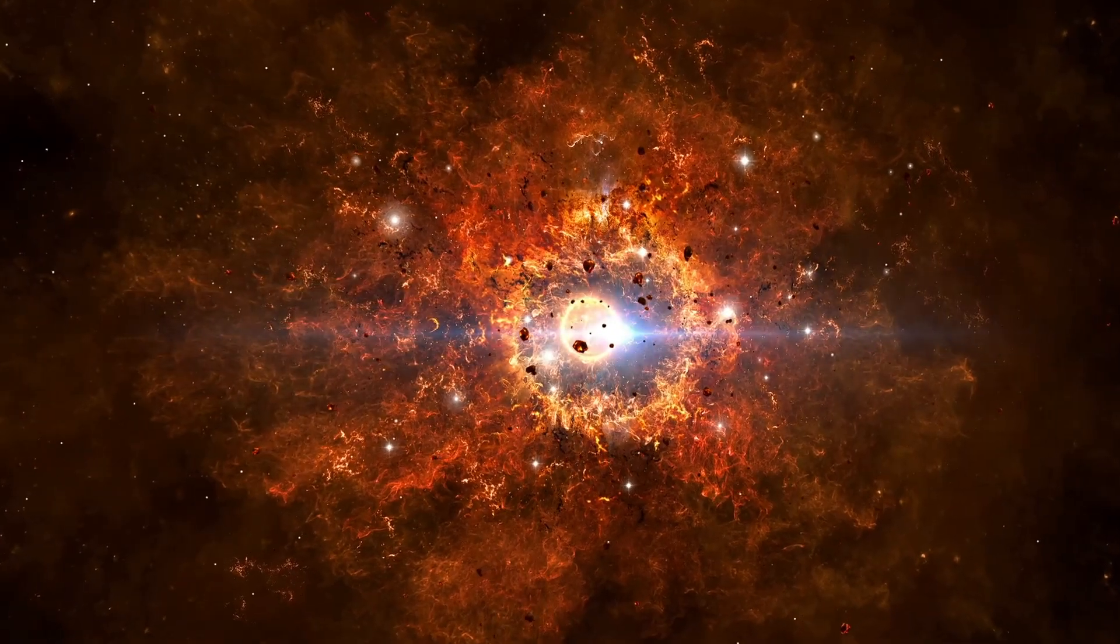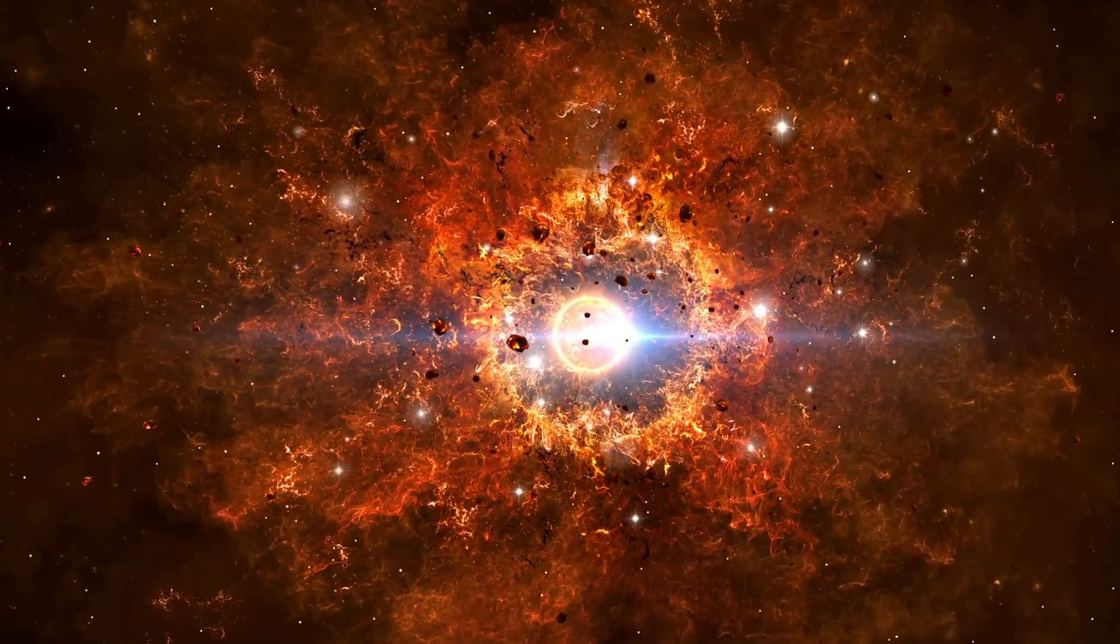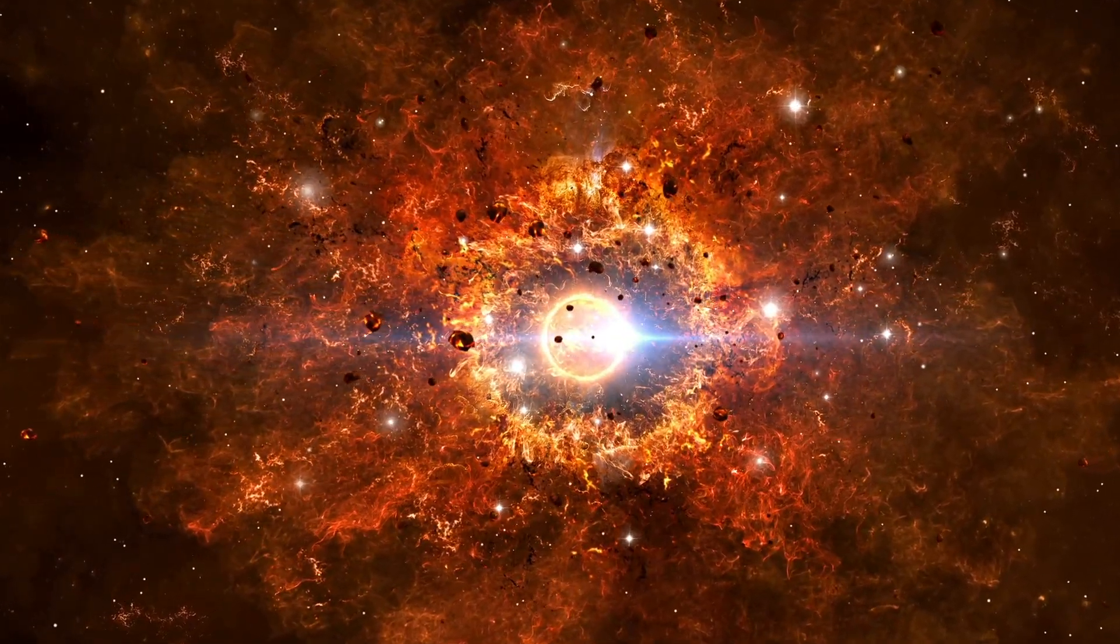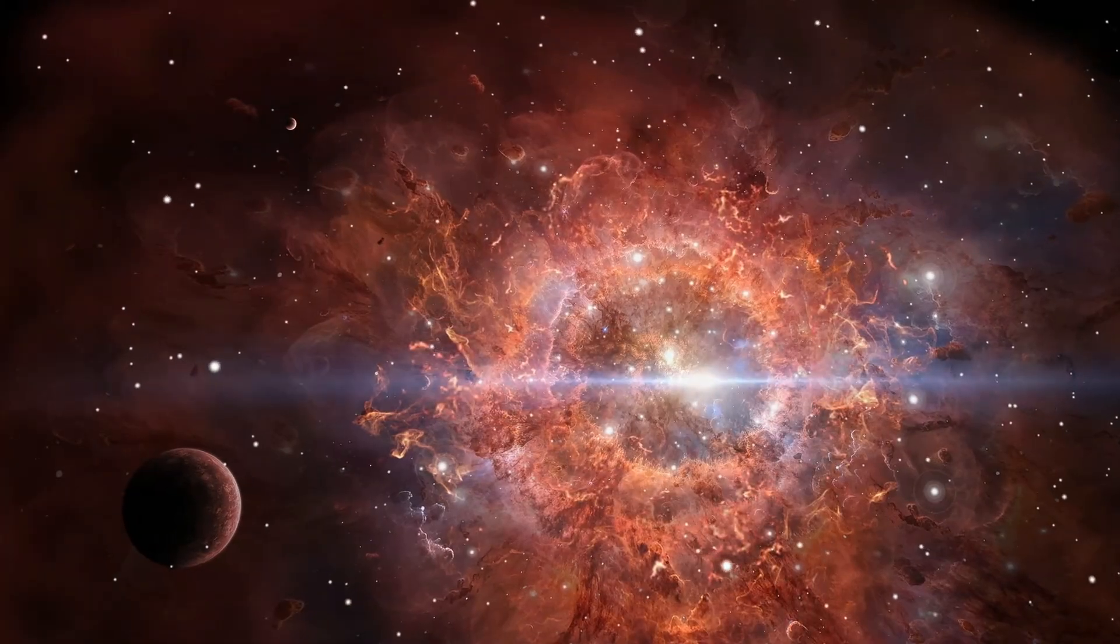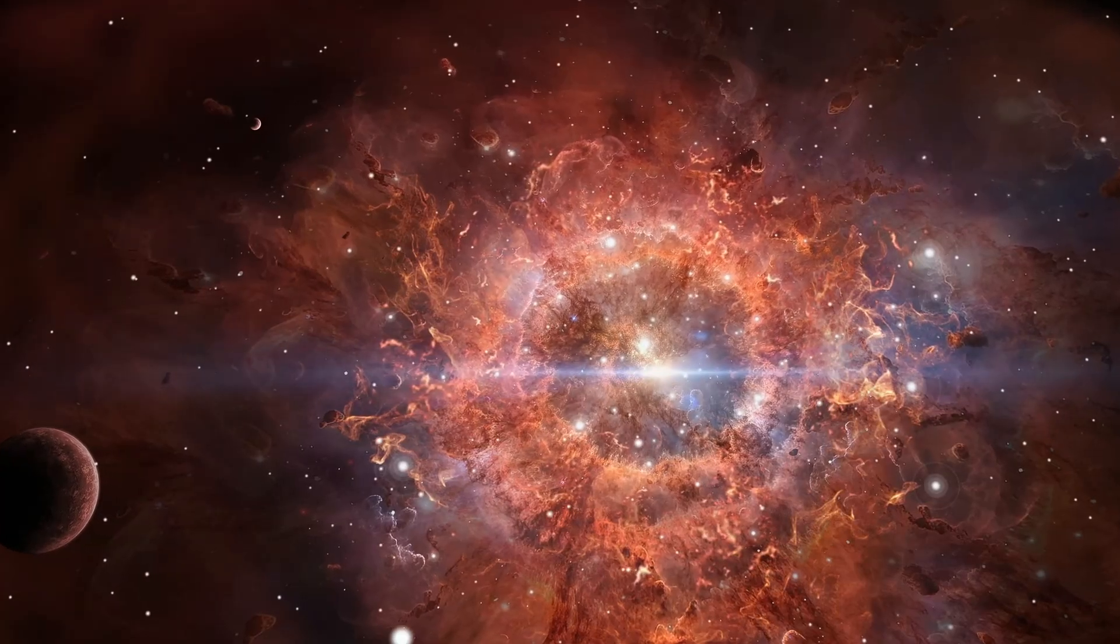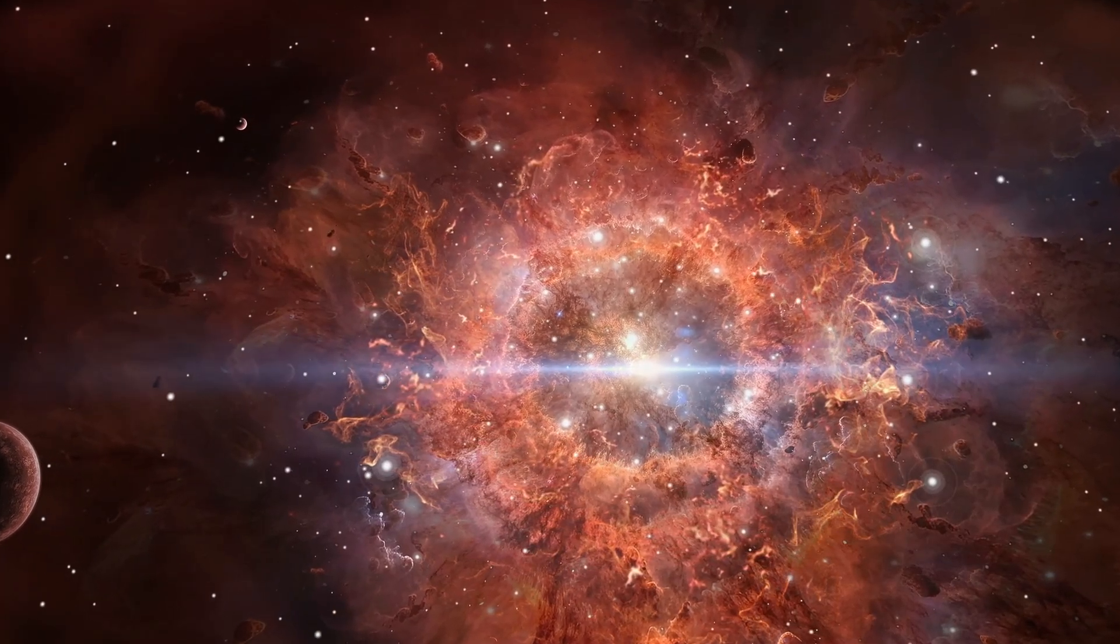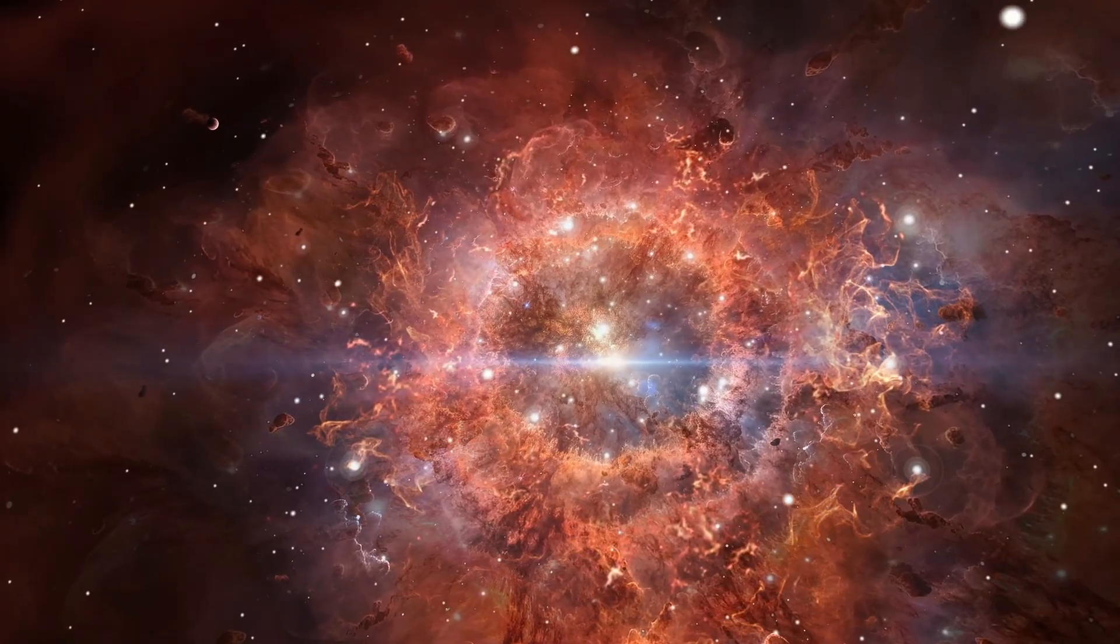Over cosmic time, this is how galaxies grow. Not by quiet accumulation, but by merging. Small galaxies fall into larger ones, feeding them with fresh stars and dark matter. Even now, our Milky Way is consuming its smaller neighbors, the Sagittarius dwarf, the Magellanic clouds. Every light we see in the sky is a survivor of this endless, graceful violence.